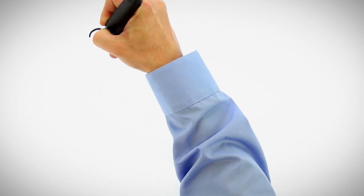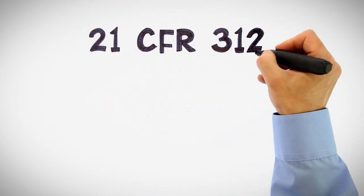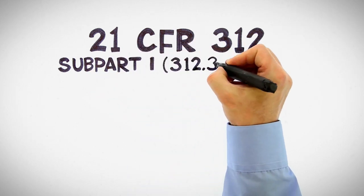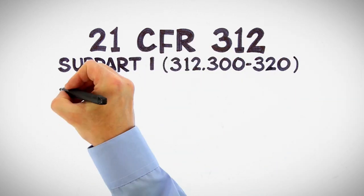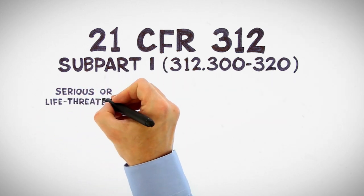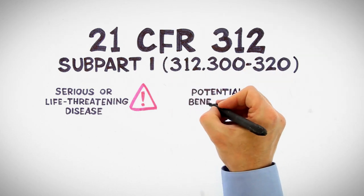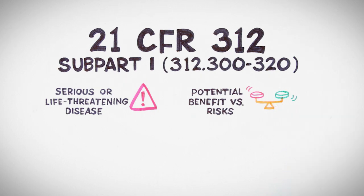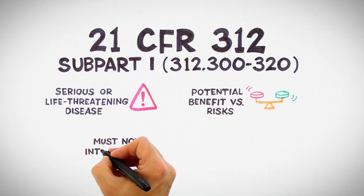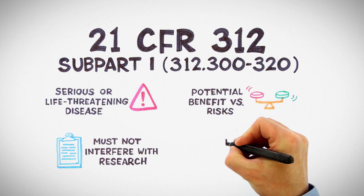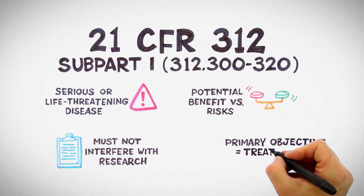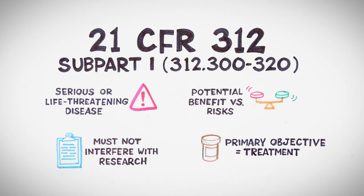The requirements are easy to look up — they're in 21 CFR section 312, subpart I, and will take you no more than 15 minutes to read. There are four core requirements. First, it's got to be a serious or life-threatening disease with no meaningful treatment available. Second, the potential benefit of the drug must outweigh the risks in consideration of the seriousness of the disease. Third, the program must not interfere with ongoing research. And last, the primary objective must be treatment. That doesn't mean you can't use the outcomes for research, but research has to take a backseat to the primary goal of treatment access.